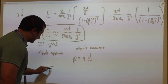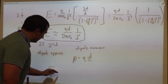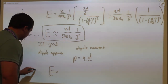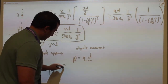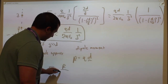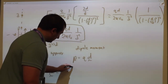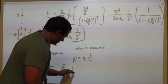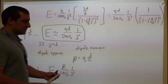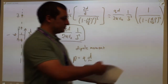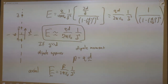Along the axis I can actually write the E vector — the axial field — as p over 2πε₀ times 1 over z³. You should now be able to answer the first set of questions.